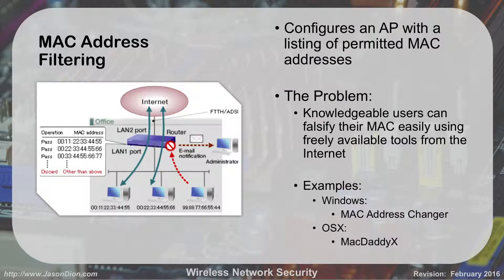MAC address filtering: every network device has its own unique MAC address and we can use that to secure our networks. We configure our access point with basically a bouncer list — a list of all MAC addresses we approve. When Chuck tries to connect, he's on the list, he gets in. Joe's not on the list, don't let him in. You can do this one of two ways: explicit allow (whitelist — only allow people on your list) or explicit deny (blacklist — allow everybody except the people you don't like). Whitelist is 'I allow these six people'; blacklist is 'I don't allow these six people.'